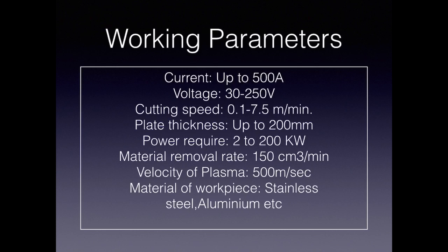Working parameters: current up to 500 amps, voltage 30 to 250 V. Cutting speed is 0.1 to 7.5 meters per minute, which provides significant cutting capability. Plate thickness up to 200 mm can be machined. Power requirement is 2 to 200 kilowatts or more depending on the working conditions. Material removal rate is up to 150 cubic centimeters per minute. The velocity of the plasma jet reaches 500 meters per second — much greater than the speed of sound.